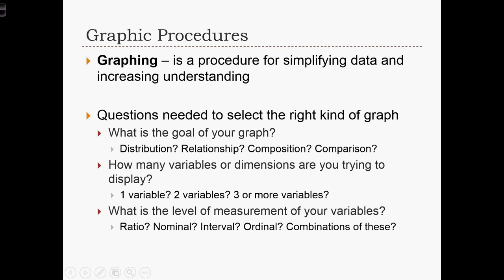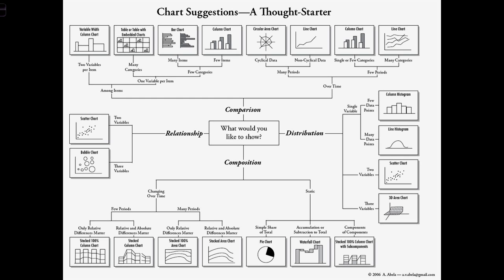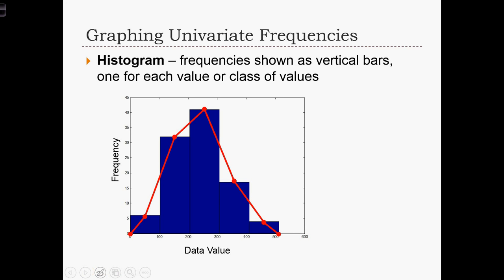This figure helps us choose which graph we should use to illustrate our data. It starts in the center of the figure with the question of what we would like to show: comparison, relationship, composition, or distribution. From there we can follow the tree out and answer questions regarding the nature of the variables, the number of variables, whether or not the variables are static or if they change over time. Different branches of this tree have different questions that need to be answered before we can select the appropriate graph to use. Most of these figures can be made in Excel or in SPSS or else in other off-the-shelf statistical software packages.